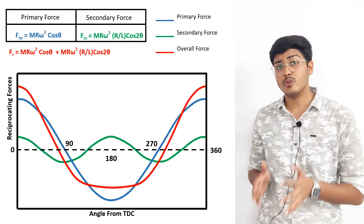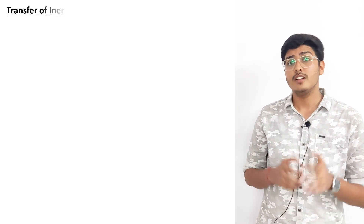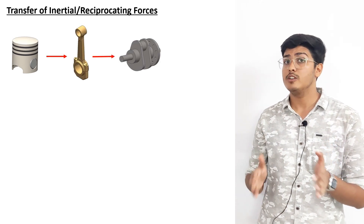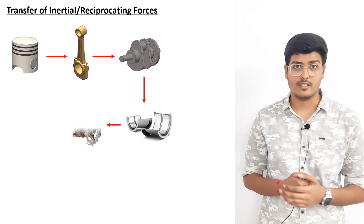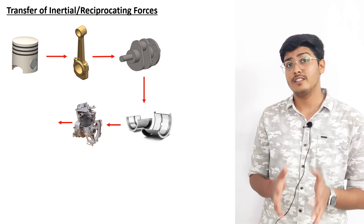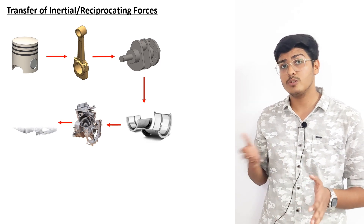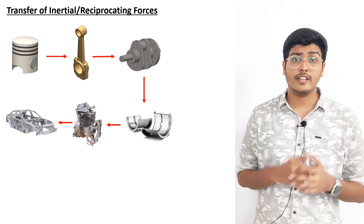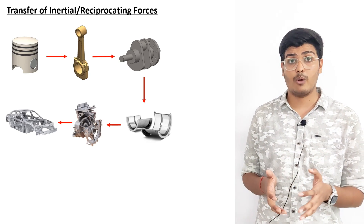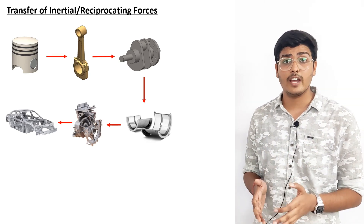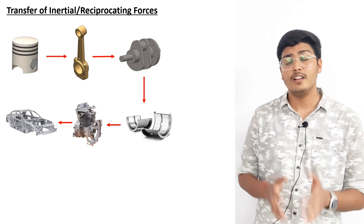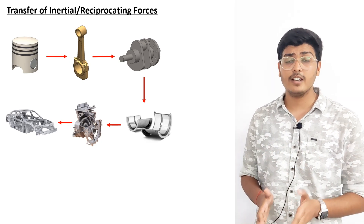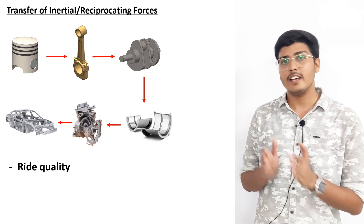If these inertial forces are not balanced inside the engine, they will be transmitted from the piston to the connecting rod, to the crankshaft, to the main bearings, and to the crankcase. From the crankcase they transfer to the frame of the vehicle through the engine mount. So we have to balance these forces internally within an engine using counterweights, engine symmetry, engine layout, balancing shafts, etc. Otherwise these forces transfer to the vehicle frame and affect ride quality and efficiency.